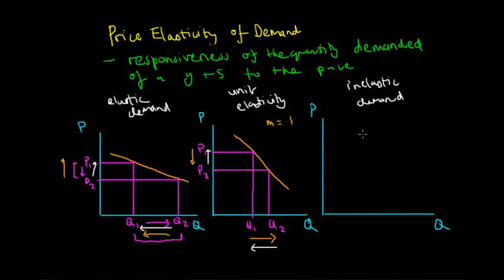Finally, we have an inelastic demand curve. This means that a change in price reflects in only a small change in the quantity demanded — the rubber band, if you think about elastics, is not elastic at all; it is very inelastic, so you cannot stretch out the quantity demanded. This is reflected by a very steep demand curve.